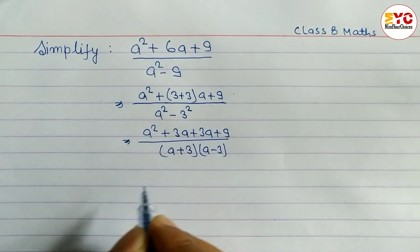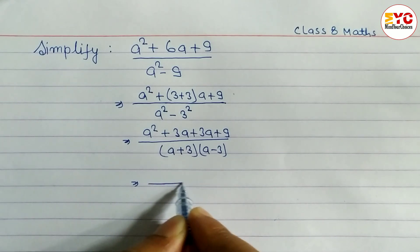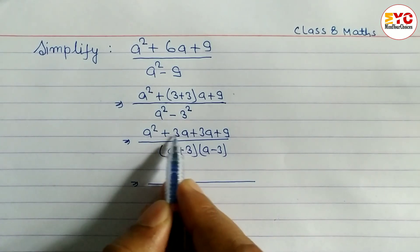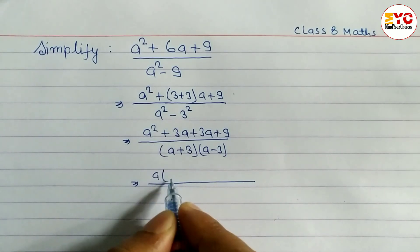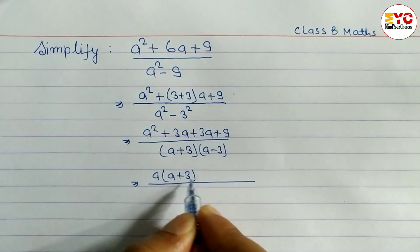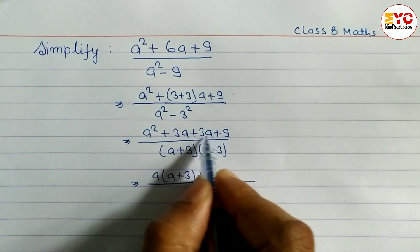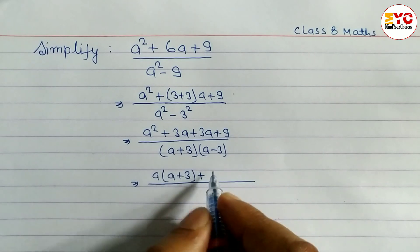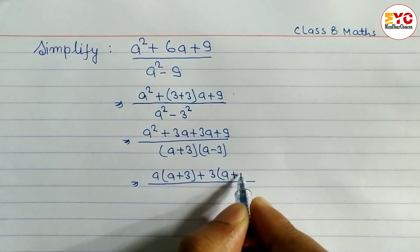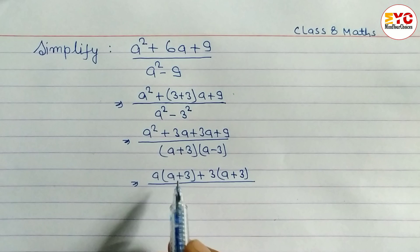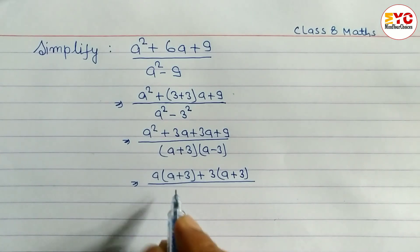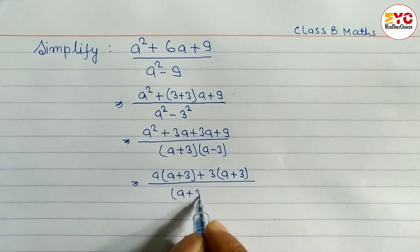Hope you understand up to here. Now from first two terms we have to take common, and what is the common from first two terms? Common is a, remaining a plus 3. Plus, from the last two terms we have to take common 3, and 9 common is 3, remaining a plus 3 into which number? It will be 3. This two always will be same, and denominator we have to write down same: a plus 3, a minus 3.